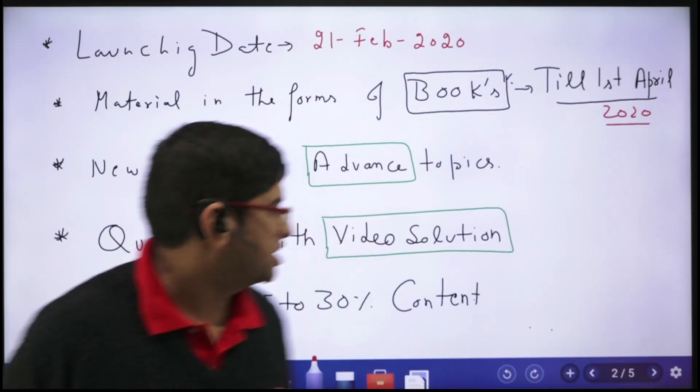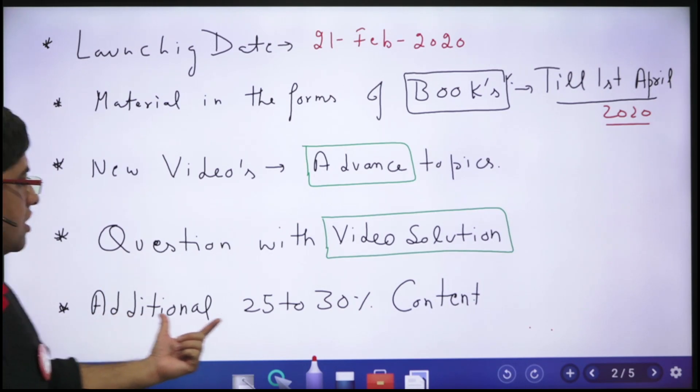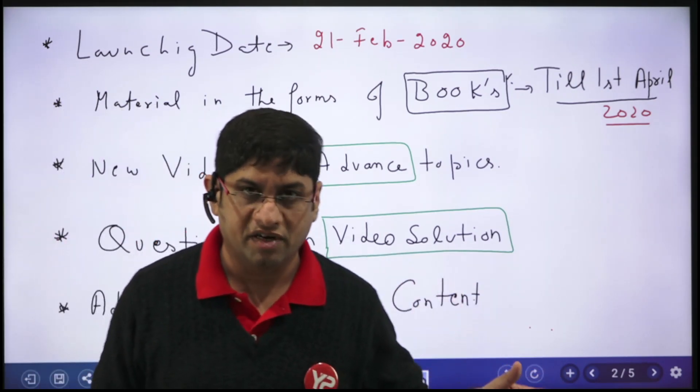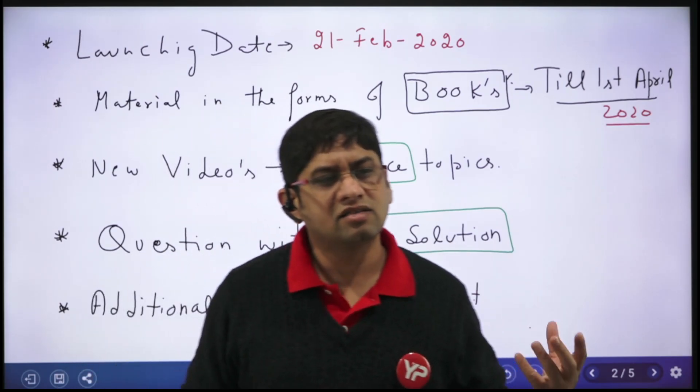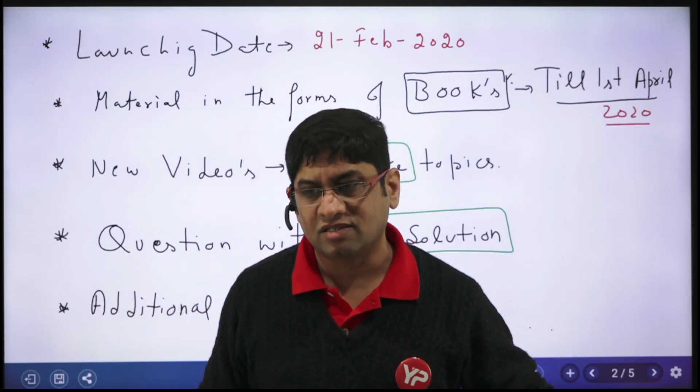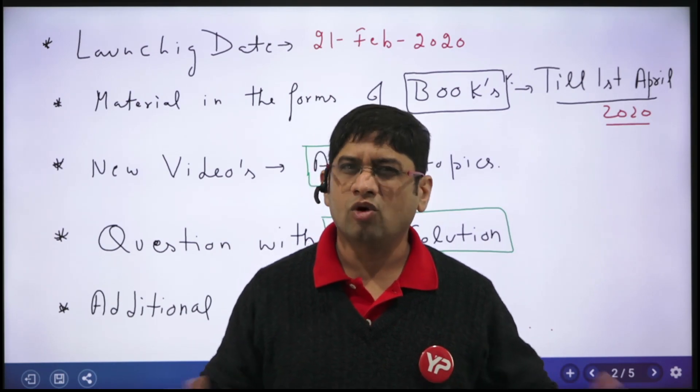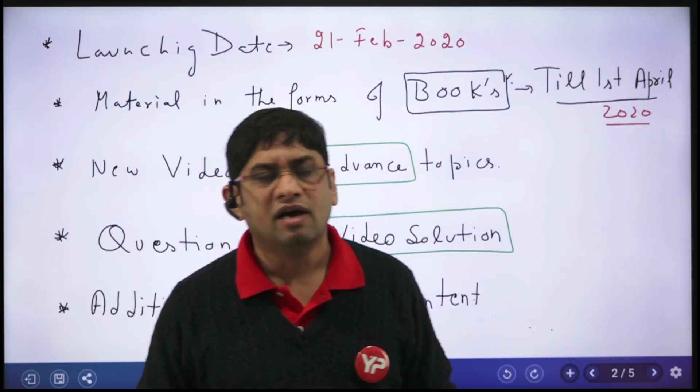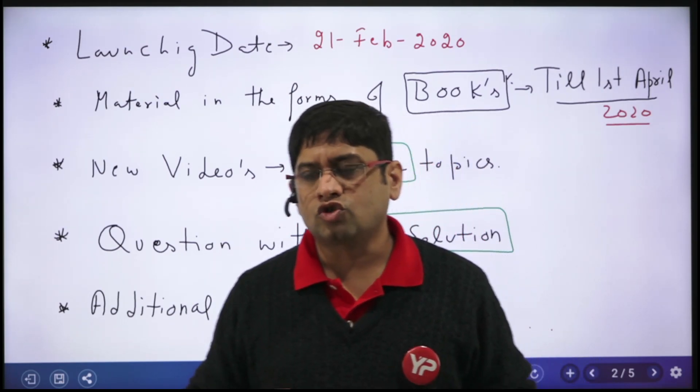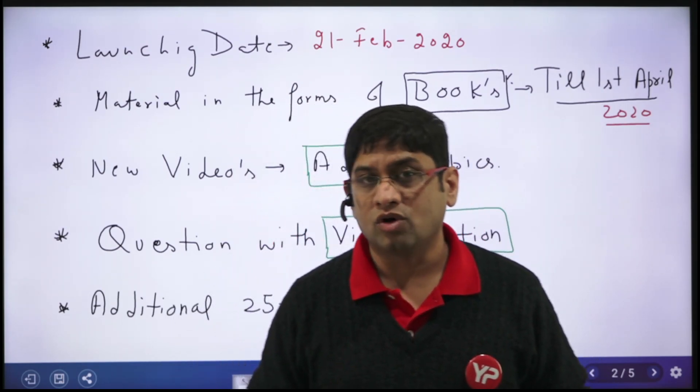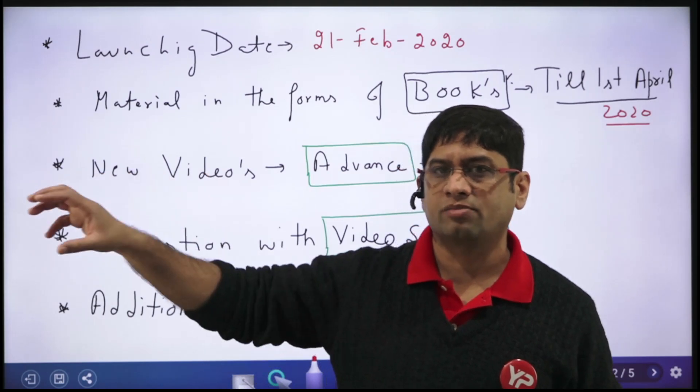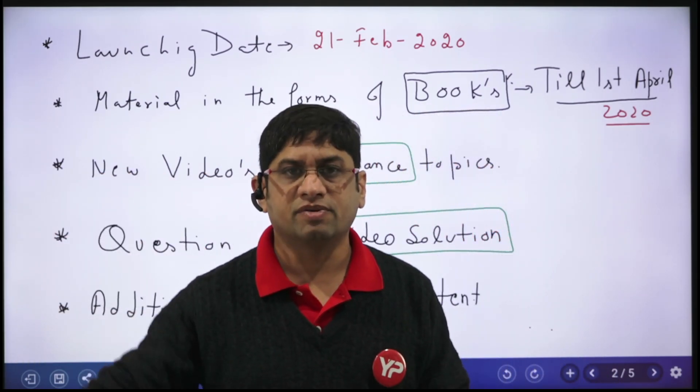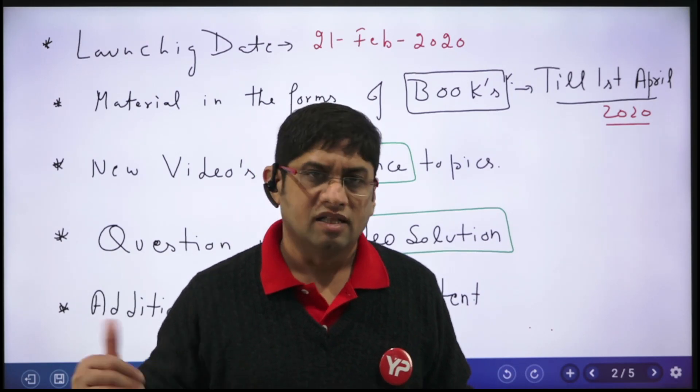We want to cover 25-30% additional content. For example, in my case I want to cover some more topics in economy. In every topic - values and ethics, project management, quality, economy - where I feel 15-30% additional content should be supplied, we are going to add.